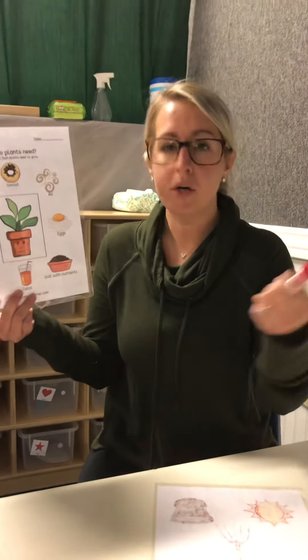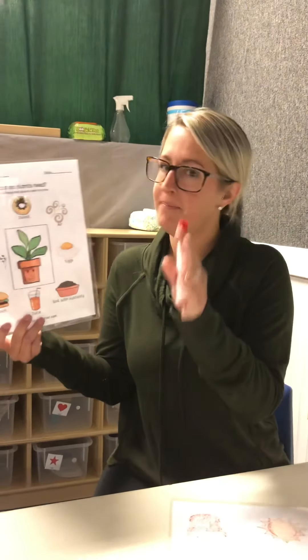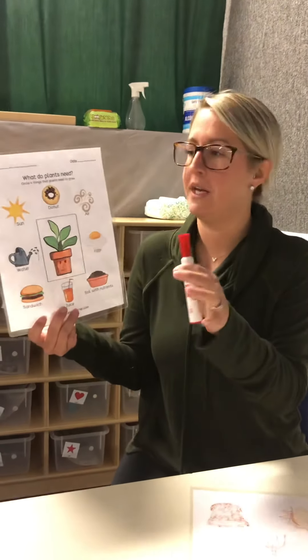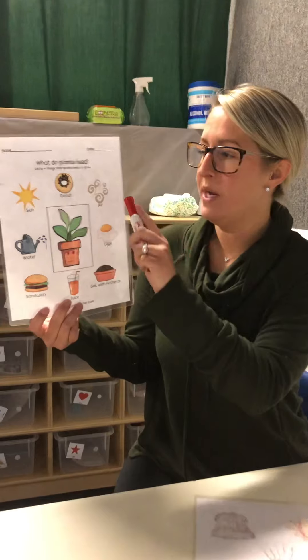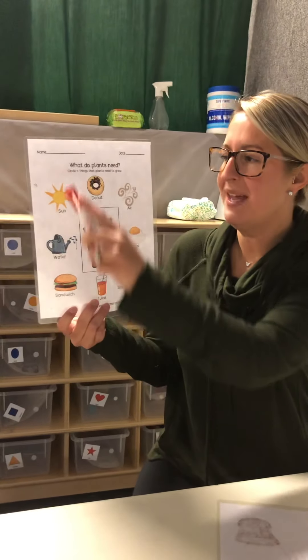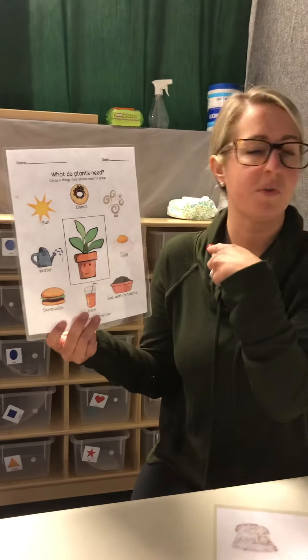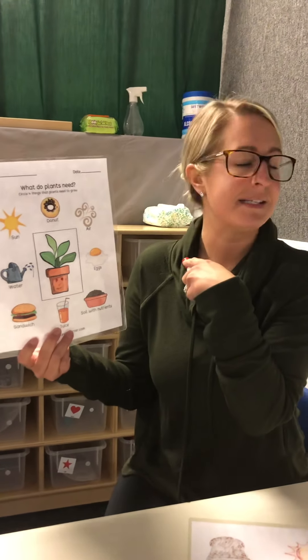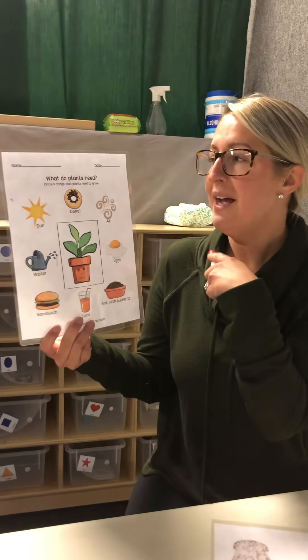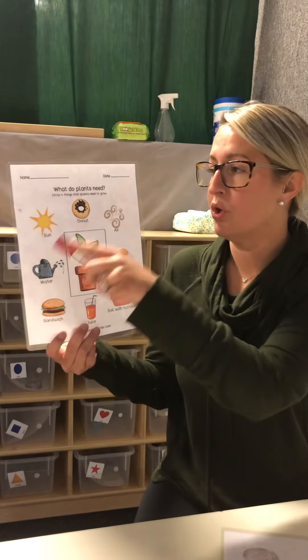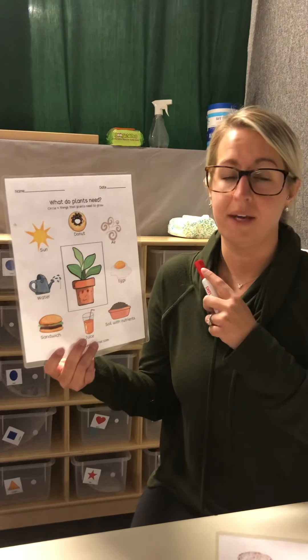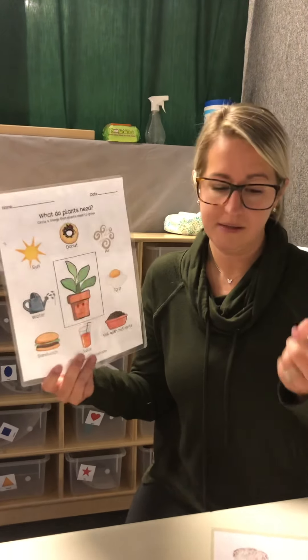You'll need a marker, crayon, pen, or pencil — whatever you have — because we are going to put big X's over things that a plant does not need, and we are going to circle the things that a plant needs.